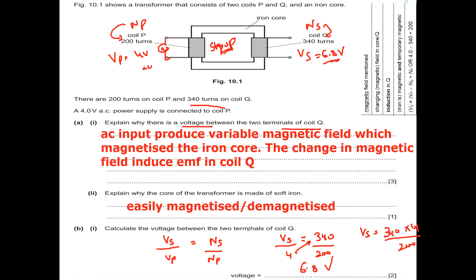This is a step up transformer because the input coil has fewer turns and the output coil has more turns. In a step up transformer, the output voltage is always higher than the input voltage, and correspondingly the output current is less than the input current.